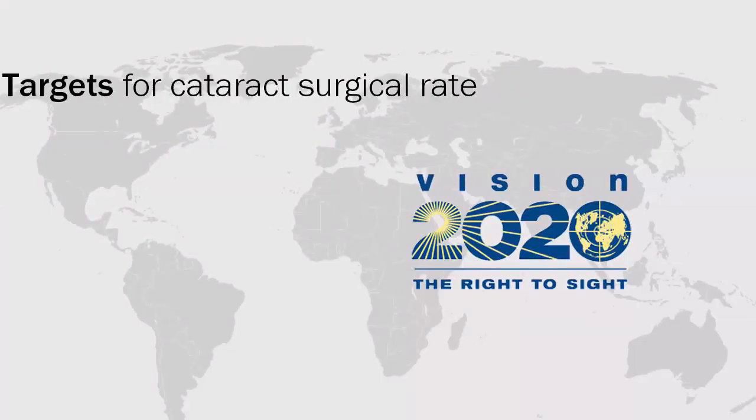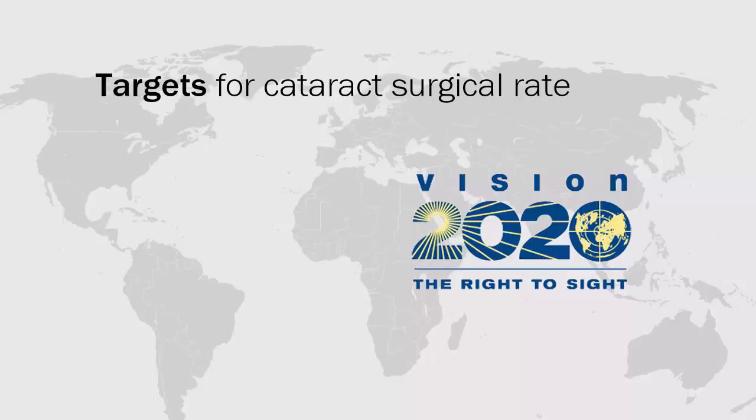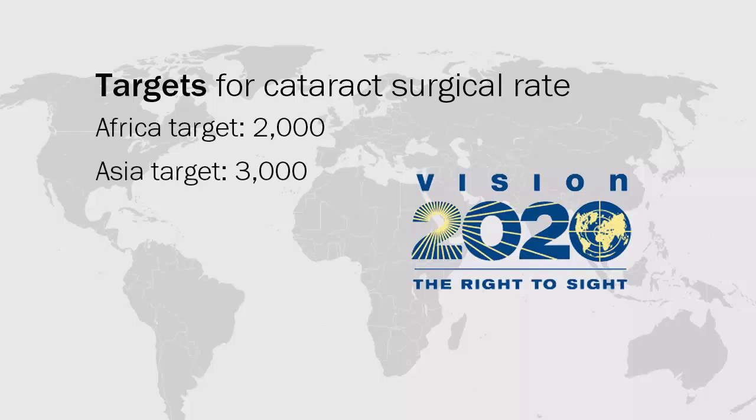The global initiative Vision 2020: The Right to Sight set targets for cataract surgical rate to help address and reduce the backlog. For Africa the rate is 2,000, and for Asia the rate is 3,000. These targets are based on the availability of human resources to facilitate surgery.